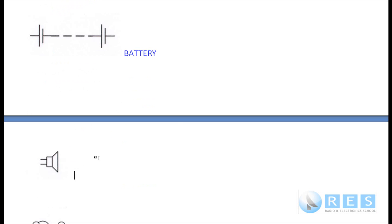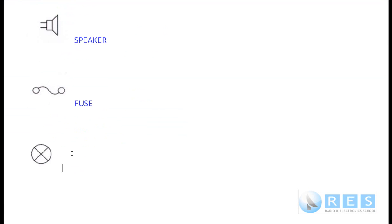This symbol is a speaker. This is a fuse. The fuse protects the circuit from over-current damage. And the last one is a lamp. That could be the indicator lamp on a power supply, the little red or green light that tells you the power supply or something's turned on. A lamp.